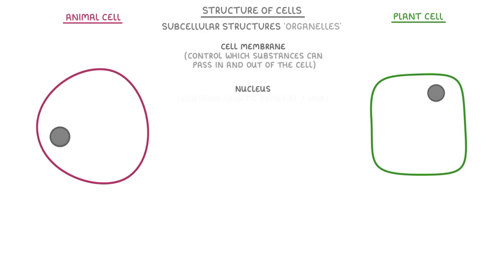Both types also have a nucleus, which contains the genetic material or DNA of the cell, so it effectively controls the activities of the cell as well.